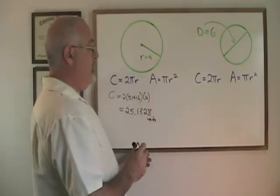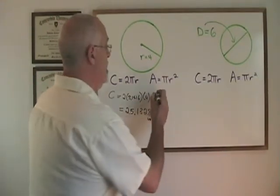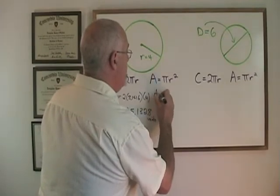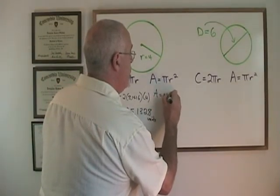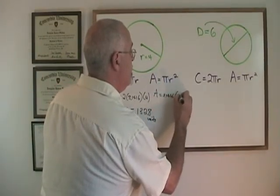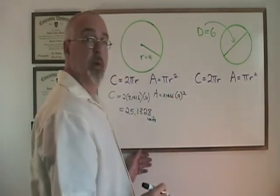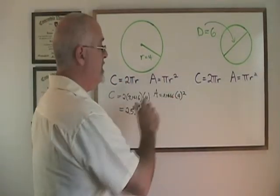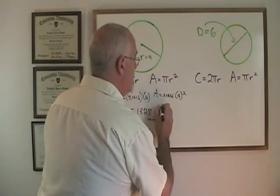Again, we will use 3.1416 as our value for pi, so our area will be equal to 3.1416 times 4 squared. We have to square the 4 first before we multiply by pi or we will get the wrong answer.